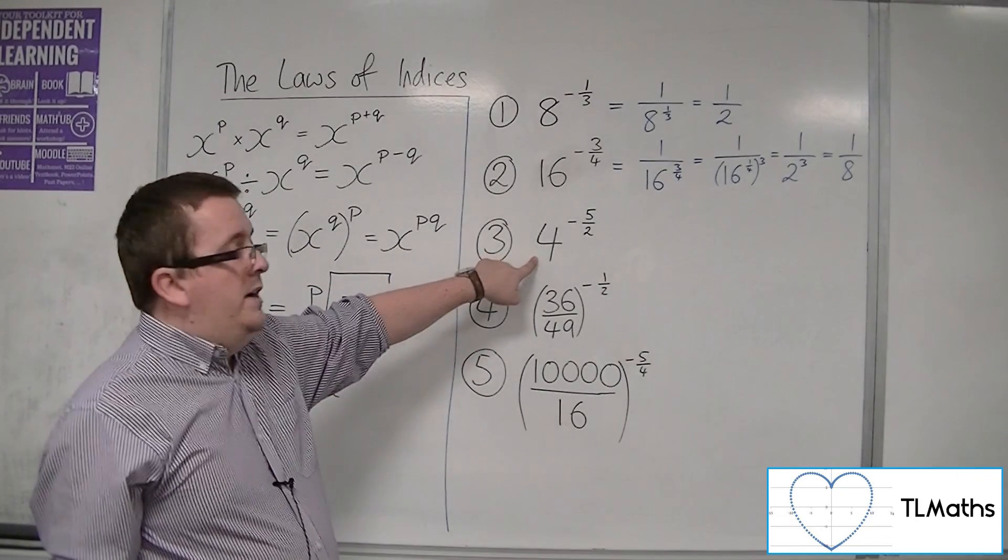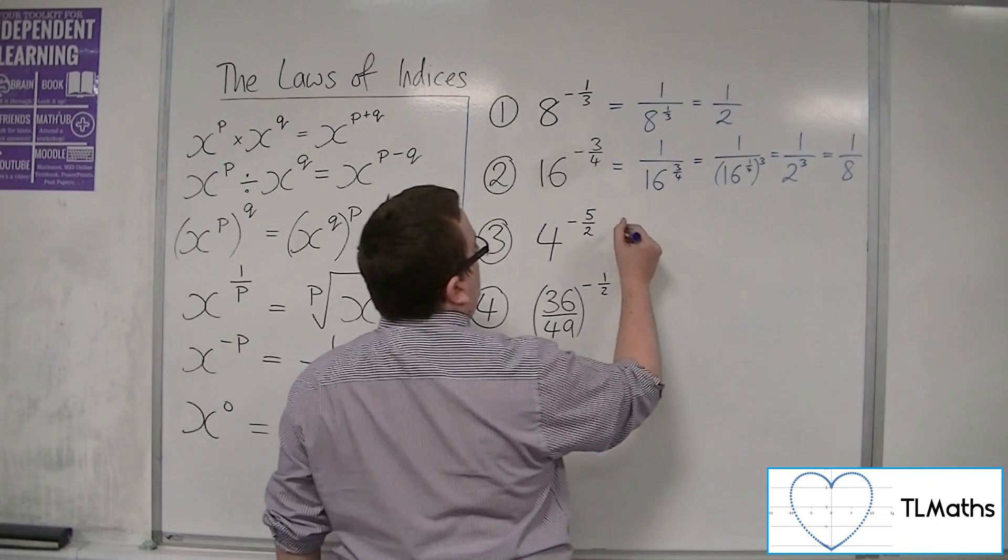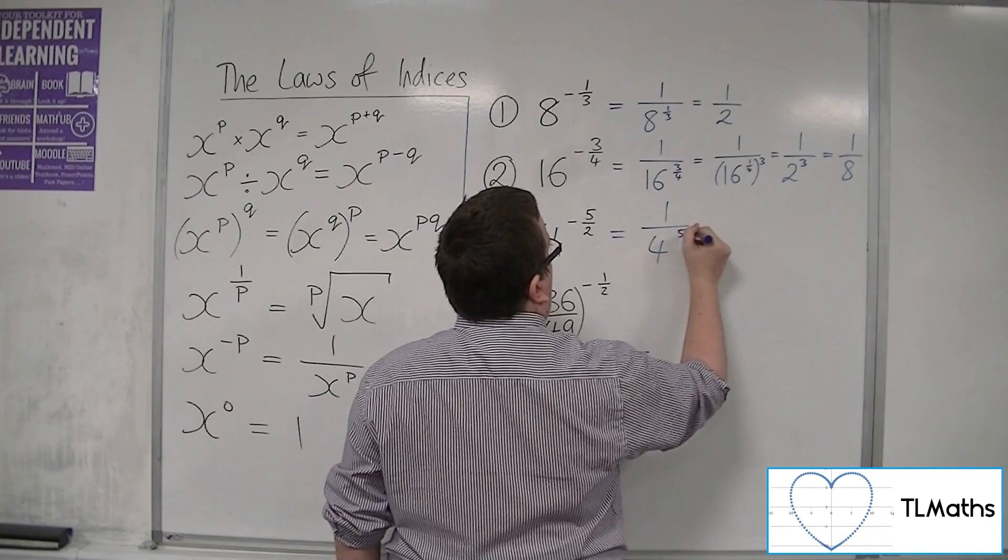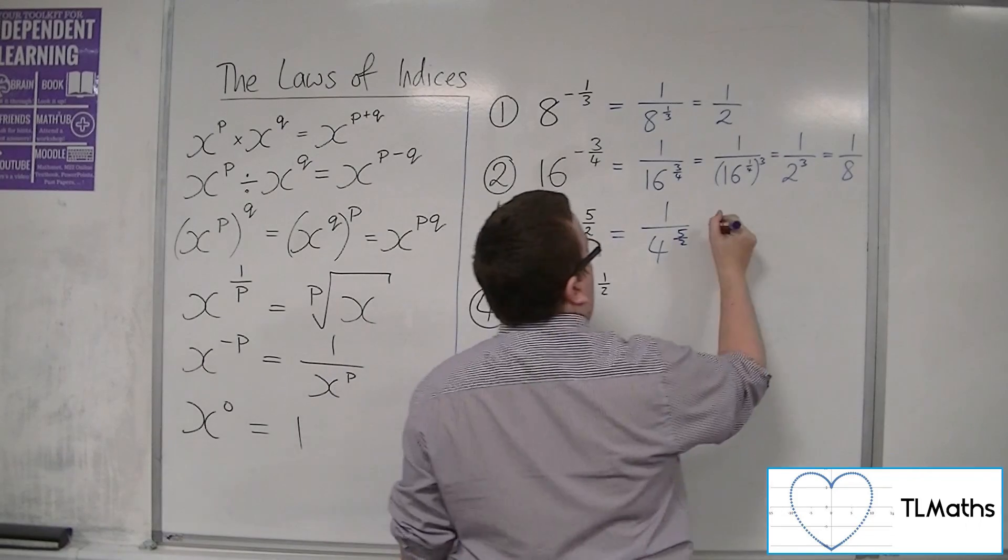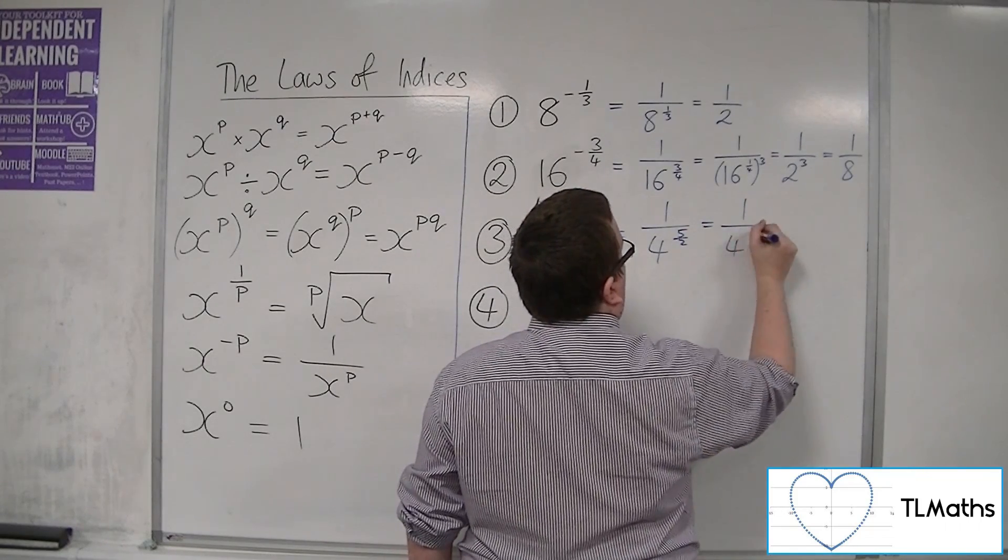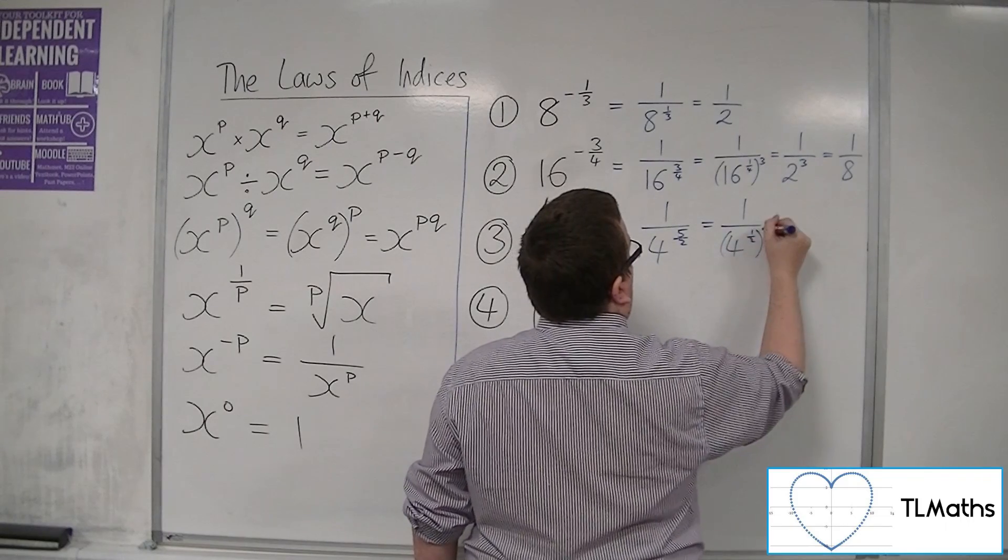4 to the minus 5 halves. Well, that's 1 over 4 to the 5 halves. Deal with the negative first. Then deal with the root. So that's 1 over 4 to the half to the 5.